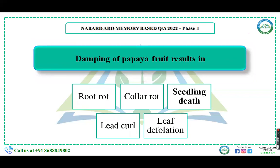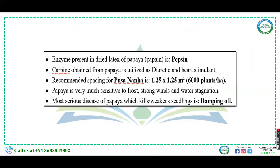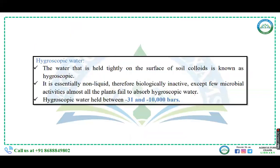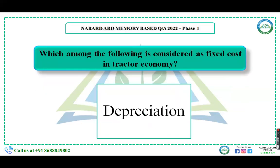Damping off of papaya fruit results in seedling death. Damping off is the most serious disease of papaya which kills the seedlings. The water that is held tightly on the surface of soil colloids is known as hygroscopic water, which is held between minus 31 to minus 10,000 bars. The fixed cost in tractor economy is depreciation.